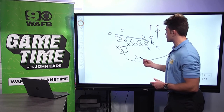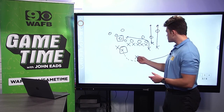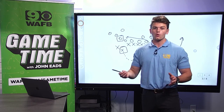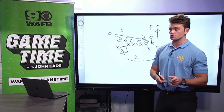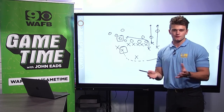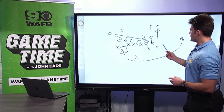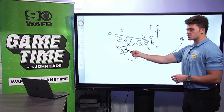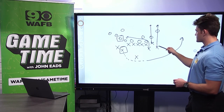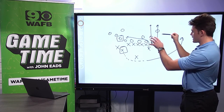Here we go — this is the first play, Ole Miss's first touchdown. Quinshad Judkins, the running back, is the guy who ends up getting wide open. Something went wrong and I'm going to show you what. Here's the alignment — X's are for the offense, O's for the defense. You've got two receivers on one side, the quarterback, a tight end, and two receivers on the other side. LSU defensively is spread out.